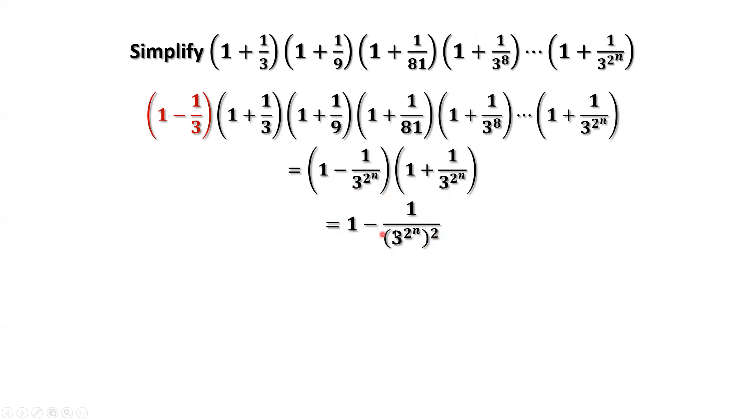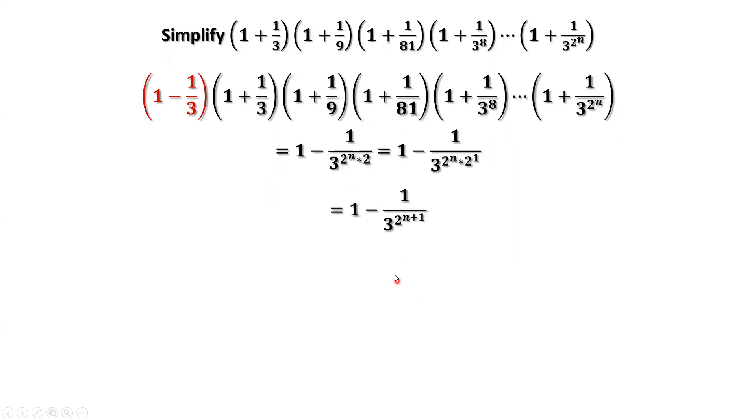What is this denominator? The power is 2 to the power of n times 2. 2 equals 2 to the power of 1. So it's 1 minus 1 over 3 to the power of 2 to the power of n plus 1. Therefore, the final answer for this expression is 1 minus 1 over 3 to the power of 2 to the power of n plus 1.